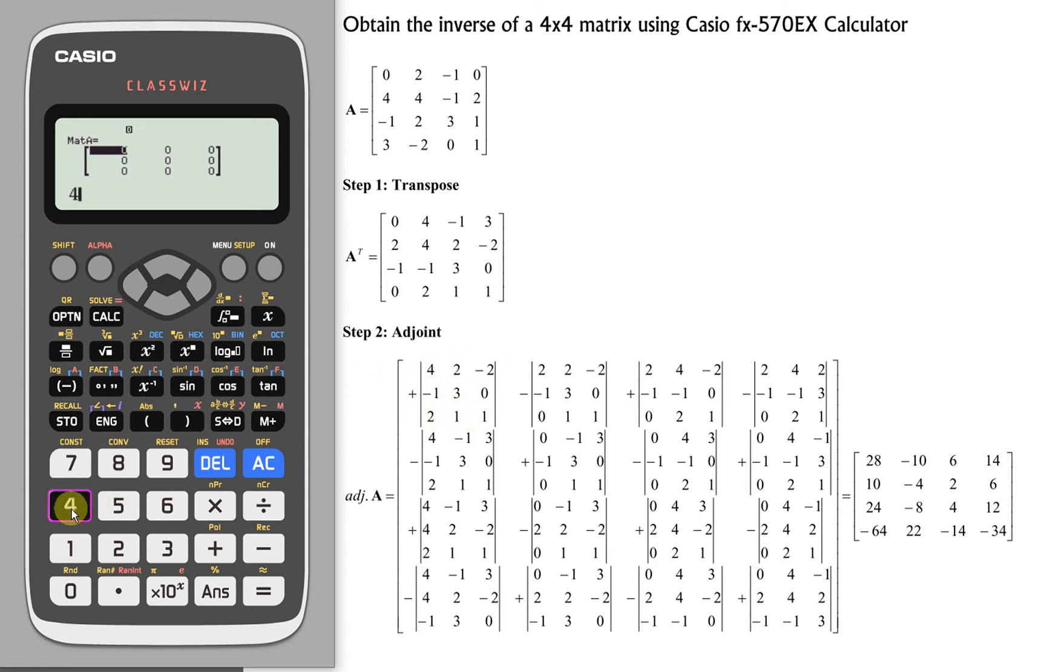So we have 4, 2, negative 2, negative 1, 3, 0, 4, 2, 1, and 1. Then also the same, we press the AC button.